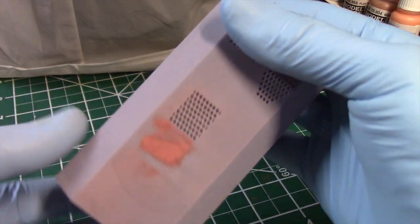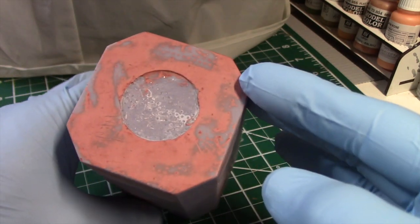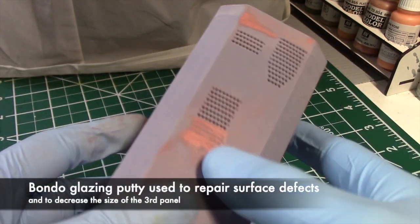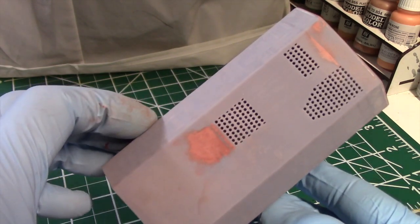There were still some defects along the top because of the supports that I added, and those were easy to repair using Bondo. I also used Bondo to decrease the size of that third panel, but this time I went just a little larger than my first attempt.